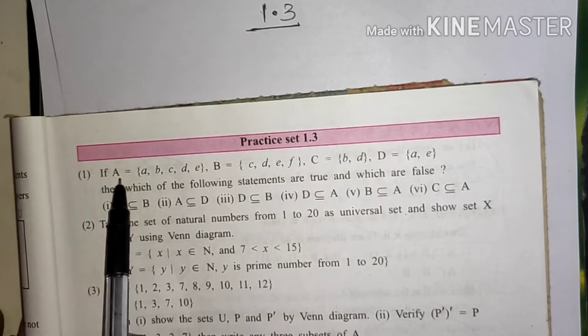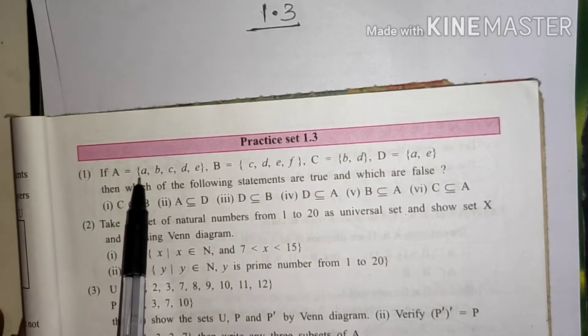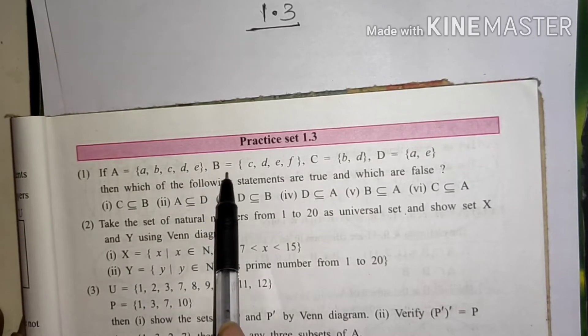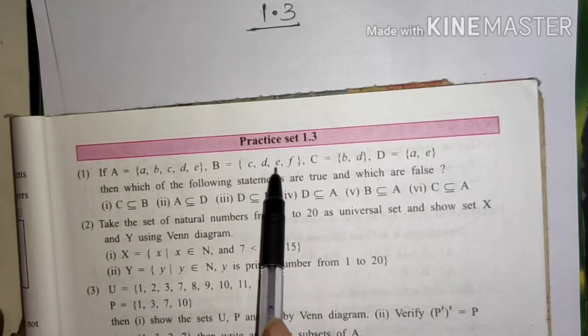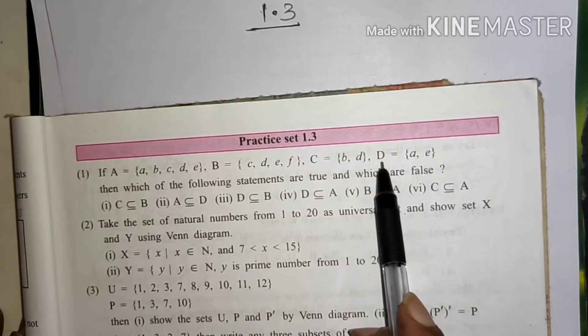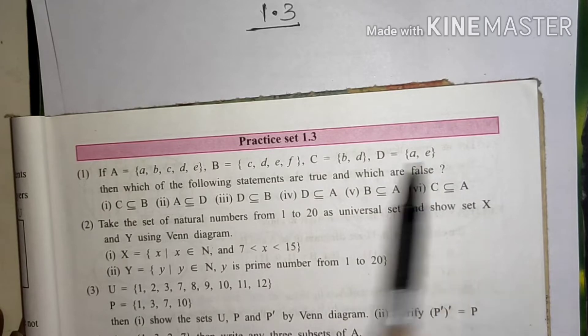If A equals A, B, C, D, E, set B equals C, D, E, F, set C equals B, D, set D equals A and E, then which of the following statements are true or which are false.